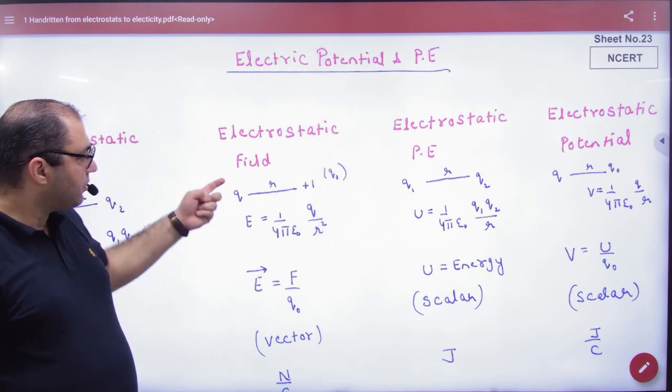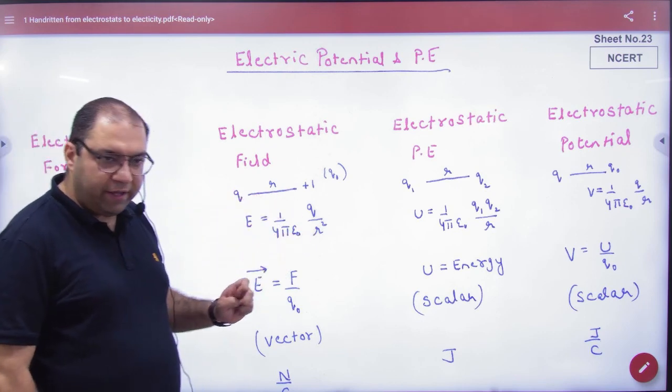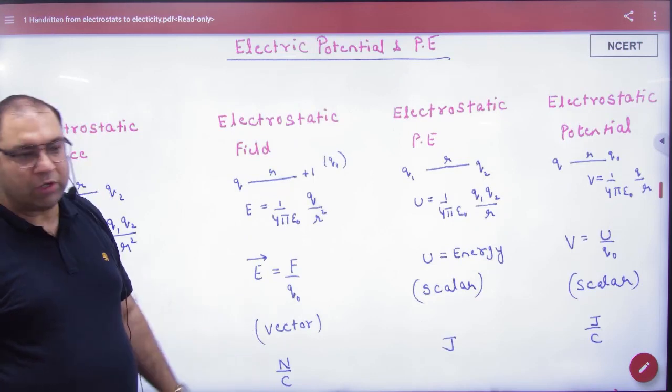Where the field was left, it was plus 1. But the charge is q by r². This is a vector which was a unit of Newton per coulomb.